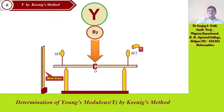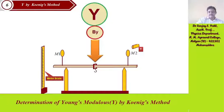The experiment by which we can find and measure Young's modulus is Koenig's method. In this experiment we will find Young's modulus with the help of this arrangement.